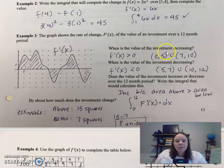So when is the value of the investment increasing? So this is when your derivative is above the x-axis. So it's all this range here, from 0 to 5, and then here, from 7 to 10.